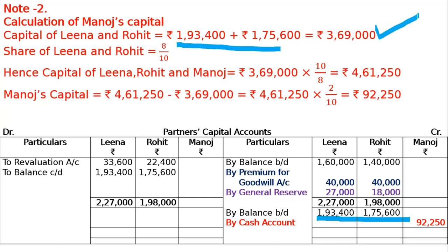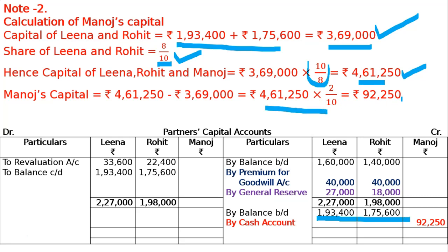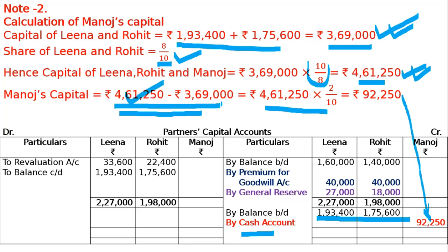The combined capital of Lena and Rohit is 3,69,000, which represents their 8/10 share. So total capital of the new firm = 3,69,000 × 10/8 = 4,61,250. Manoj's share = 2/10 of 4,61,250 = 92,250. Alternatively, 4,61,250 minus 3,69,000 = 92,250 — the difference is the same. Therefore Manoj's capital brought in by cash = 92,250.